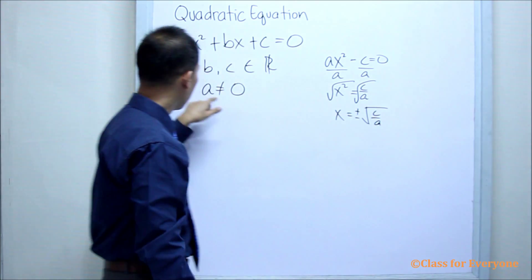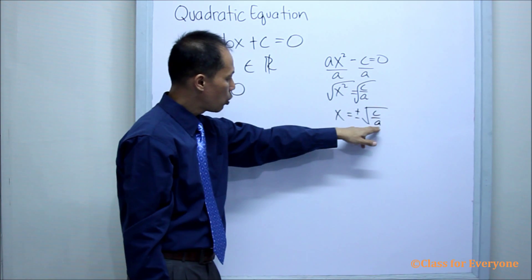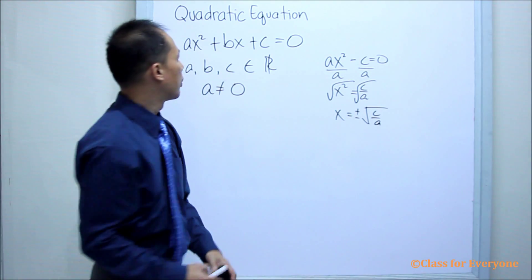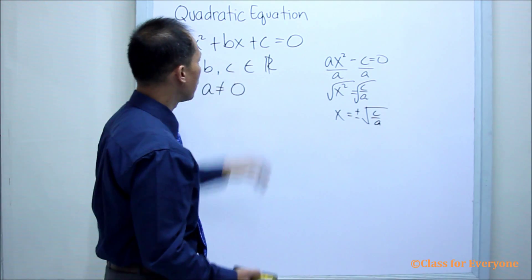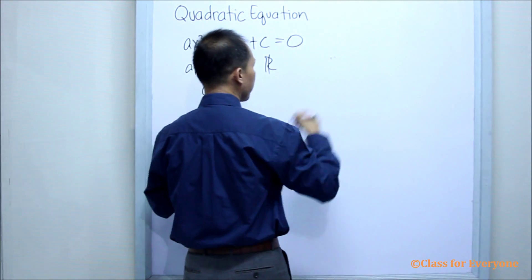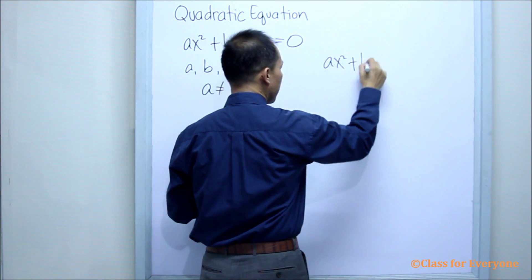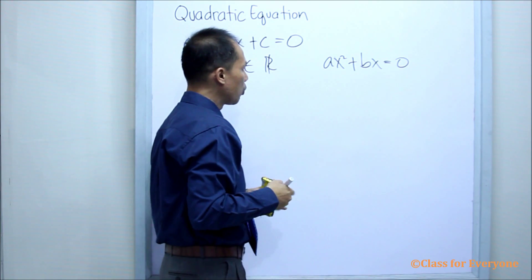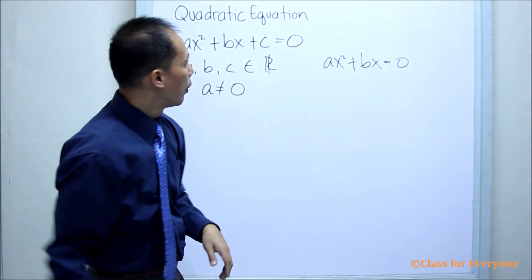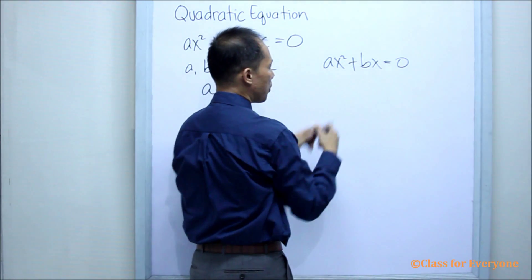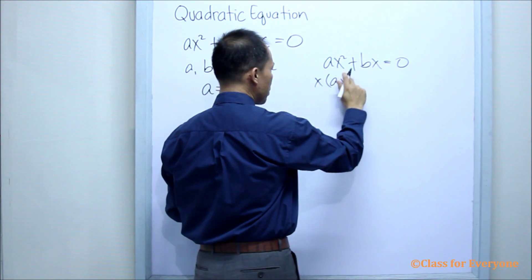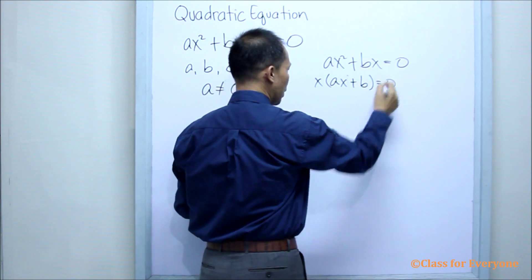Notice that A should not be equal to zero, so this denominator will never be zero and this is accepted. Now, what if C is equal to zero? We will have AX squared plus BX equals zero. To find X, we factor out X because both terms have a factor of X, giving us X times AX plus B equals zero.